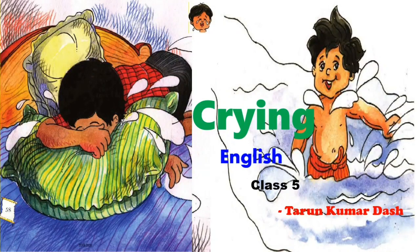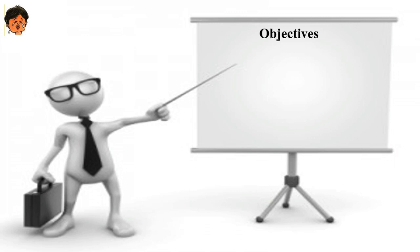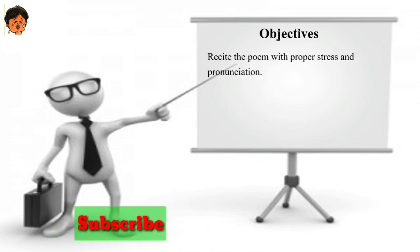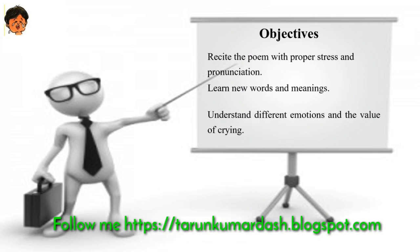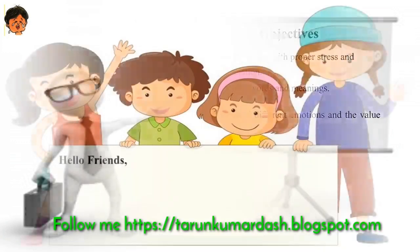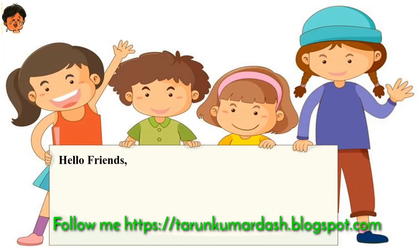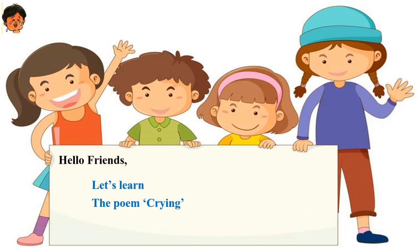I would like to request all of you, please watch this video up to the end and find your solutions. Before going to the lesson, let us find out the objectives. Number one: recite this poem with proper stress and pronunciation. Number two: learn new words and meanings. Number three: understand different emotions and the value of crying. Let's learn the poem cry.